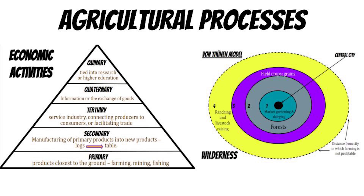What's up, YouTube AP Human Geography students? It's Coach White. It's second semester, Unit 5. My first topic is Economic Activities and the Von Thunen Model. Let's get going.